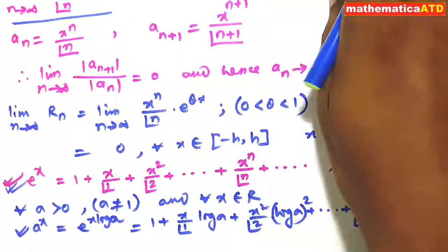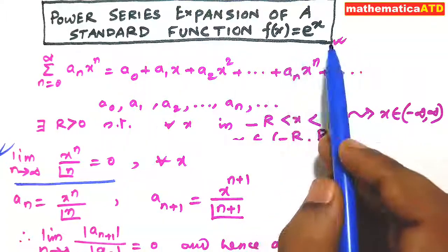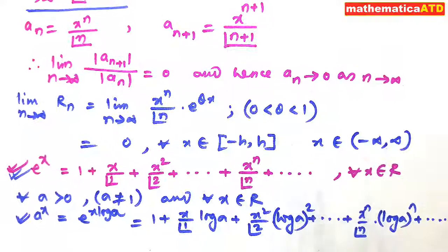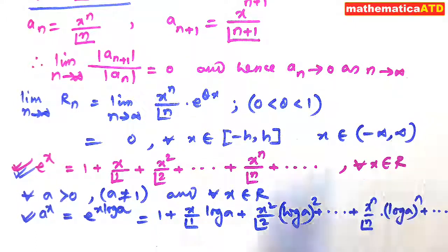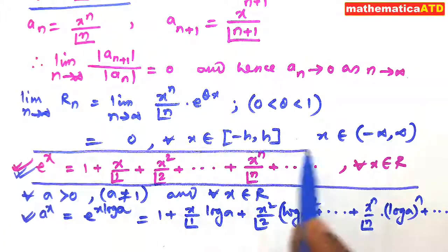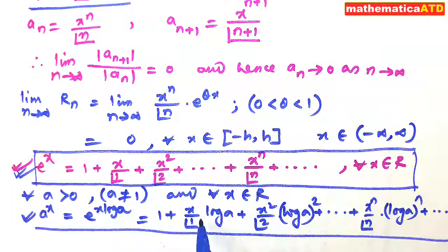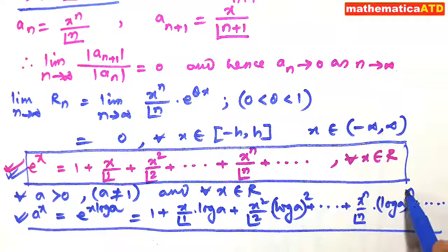To summarize: the power series expansion of f(x) = e^x gives us e^x = 1 + x/1! + x²/2! + ... + x^n/n! + ..., for all x ∈ ℝ. Also, the expansion of a^x is: a^x = 1 + x/1! * log a + x²/2! * (log a)² + ... + x^n/n! * (log a)^n + ... Thank you. Have a nice day.